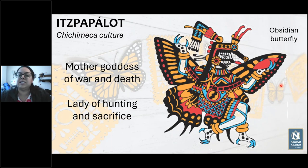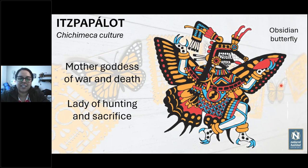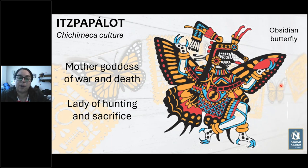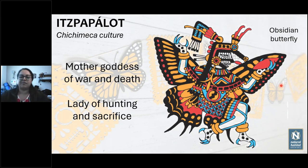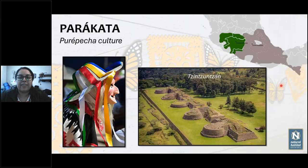One of those deities is Itzpapalotl — from the Chichimeca culture — the goddess of war, death, hunting, and sacrifice. These are characteristics we don't usually associate with butterflies, which seem so fragile and ethereal. But for the Chichimecas, butterflies were dangerous and fierce. That's why they depicted the goddess Itzpapalotl as an obsidian butterfly. Now I want to go a little deeper into the Purépecha culture — also known as the Tarascan — another empire that fought a great deal with the Mexica/Aztec empire.